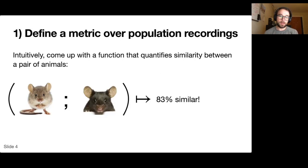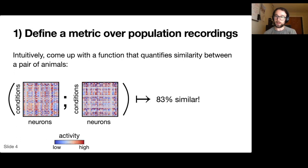More precisely, the input to this function is going to be two matrices of neural populations recordings. These are recordings over the same set of experimental conditions, but obviously the neurons in each animal are completely unmatched and distinct from each other.